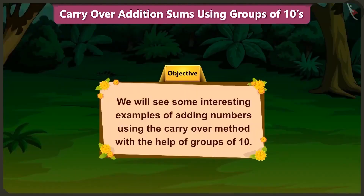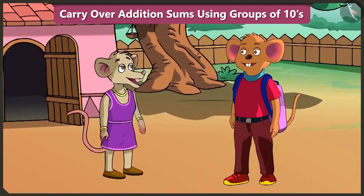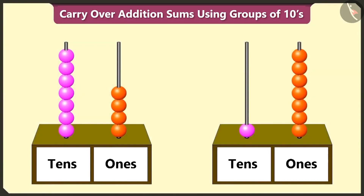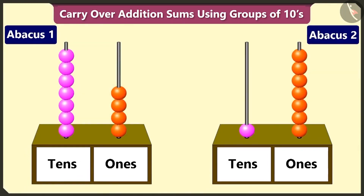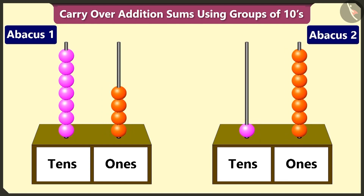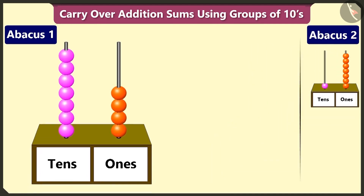In this video we will see some interesting examples of adding numbers using the carryover method with the help of groups of tens. We had great fun in the zoo yesterday and we learned a lot as well. Give me some more examples to practice. Look, here are 2 abacuses. With the help of the abacus beads, try to identify the numbers and add them.